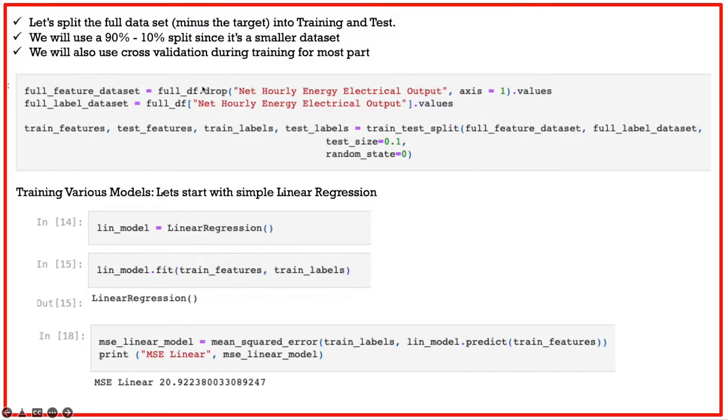So we loaded the data into a data set called full_df. Now we will split this full_df into the feature and the label data set, and then we are going to split the data set into train and test features and train labels and test labels. Here you see we are splitting it with the test size as 10%. Now let's look at what linear regression yields as MSE for our training.